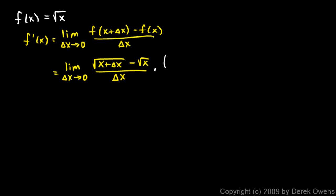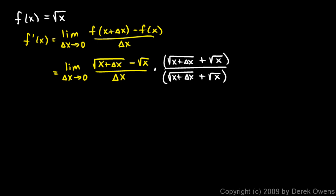I'm going to multiply by the square root of x plus delta x plus the square root of x, over that same thing — the square root of x plus delta x plus the square root of x. Obviously this thing I just multiplied by is equal to one, so multiplying by one is perfectly legal. This is just the conjugate — all I did was change the minus sign to a plus sign. Multiplying by the conjugate is one of the standard approaches for simplifying expressions involving radicals.